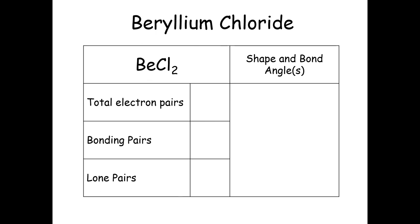We're going to work through different examples and you can note down as we go. For each one I'm going to complete a table: we look at the total number of electron pairs around the central atom, how many are involved in bonding, and if there are any leftover — what we call lone pairs — and then what shape that makes overall.